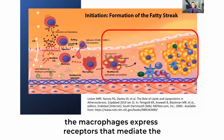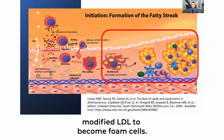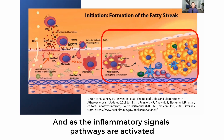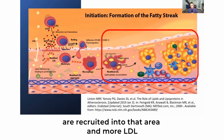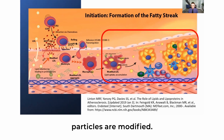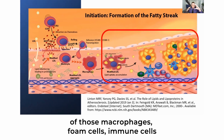The monocytes differentiate into foam cells. In the red circles on the right side, you can see that macrophages express receptors that mediate the internalization of VLDL, ApoE remnants, and modified LDL to become foam cells. As the inflammatory signaling pathways are activated in macrophage foam cells, more immune cells are recruited into that area and more LDL particles are modified — a vicious cycle.